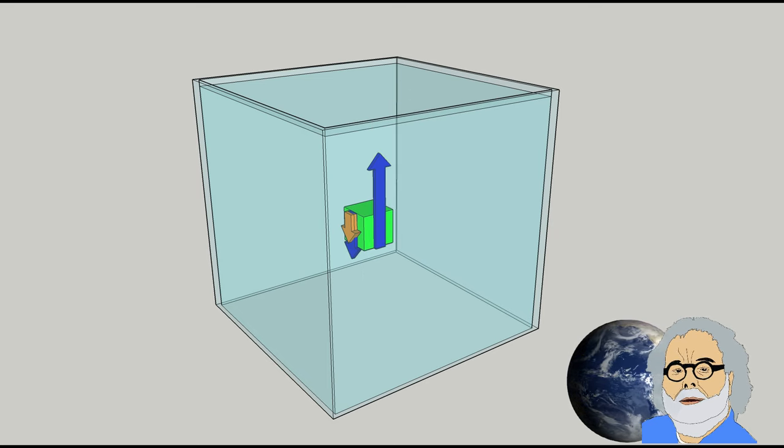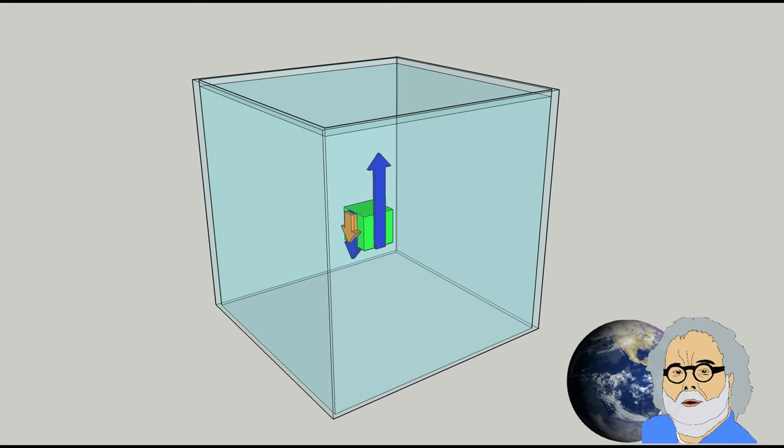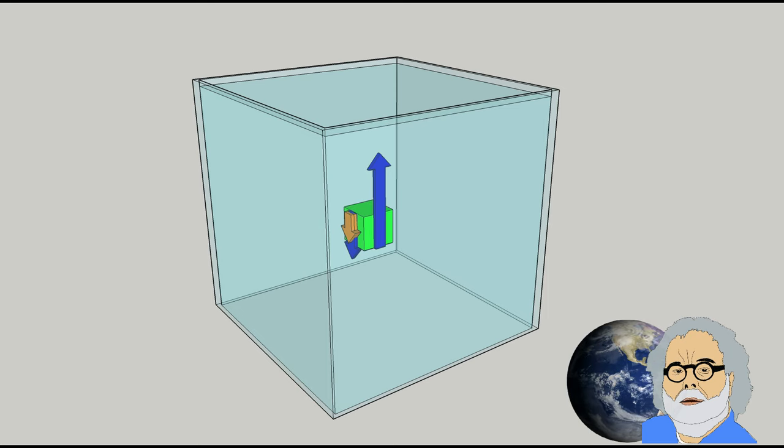If we look at the balance of these three forces - the weight of the cube, the downward force, and the upward buoyant force - it is no longer in equilibrium. The upward force is greater than the downward force and the weight of the cube combined. Therefore, the cube will go up.